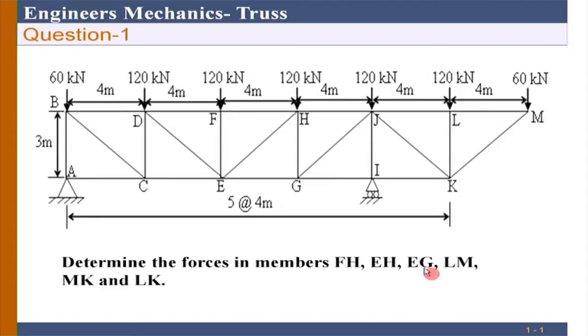Just solve FH, EH, and EG. Take any method, but again, the main point here is these three members are actually at the middle of the truss. So therefore, as we all know, method of sections would be more appropriate to solve for these three forces.